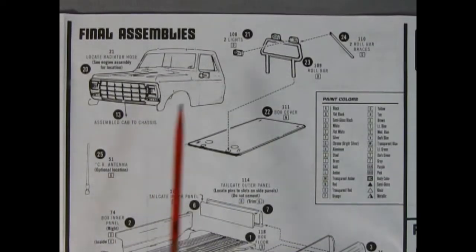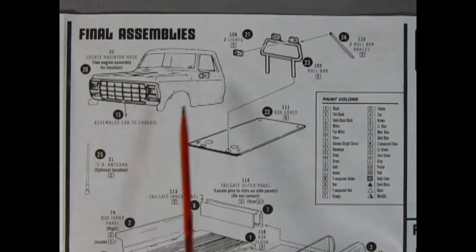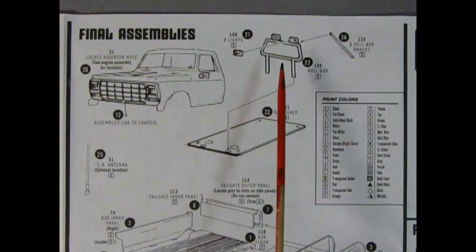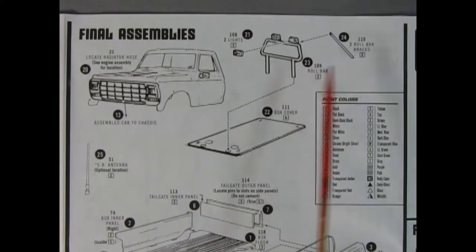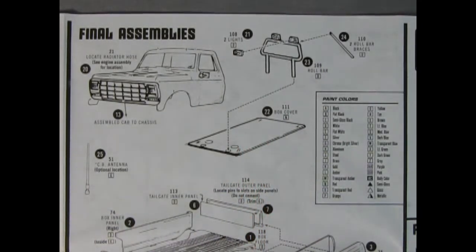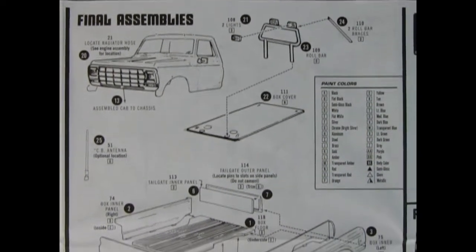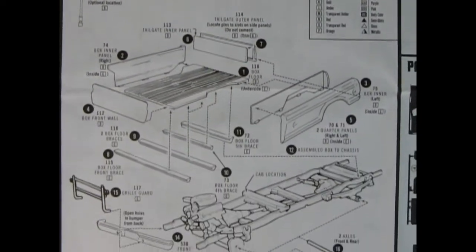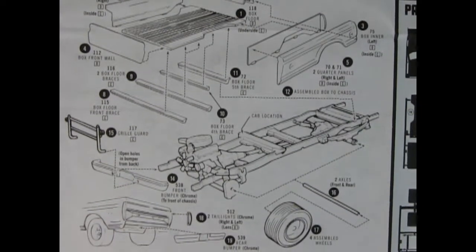In our final assemblies we have the cab being dropped into place. There's our roll bar with the optional lights up top as well as two braces. We have our box lid cover and our CB antenna and a nice paint chart right here.